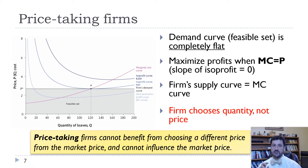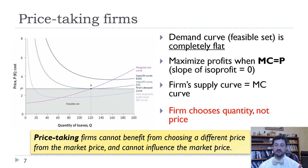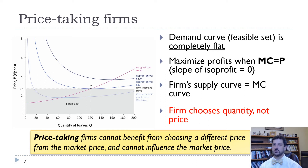This is a little bit different than a price setting firm. When a firm is a price setting firm, they face a tradeoff between lowering the price and selling more versus raising the price and selling less. And so the marginal revenue curve is actually downward sloping. In this case, the marginal revenue curve is just that firm's demand curve — it's just flat, equal to the market price.